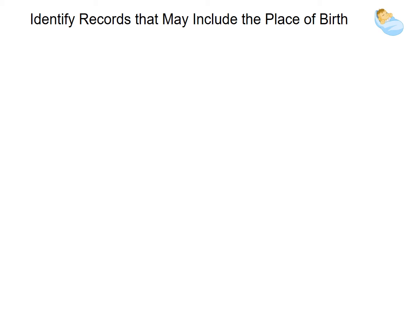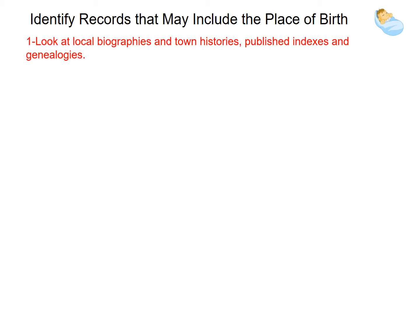So where do we find those records? Look at local biographies and town histories, published indexes, and genealogies. Don't forget FamilySearch books. I have found manuscripts about my family by putting in my surname in the search bar, and other suggested searches came up on the left. It was an online manuscript that told me the ship they came on and the general area of Ireland they came from. Don't forget to try wildcards in the spelling of a person's name.